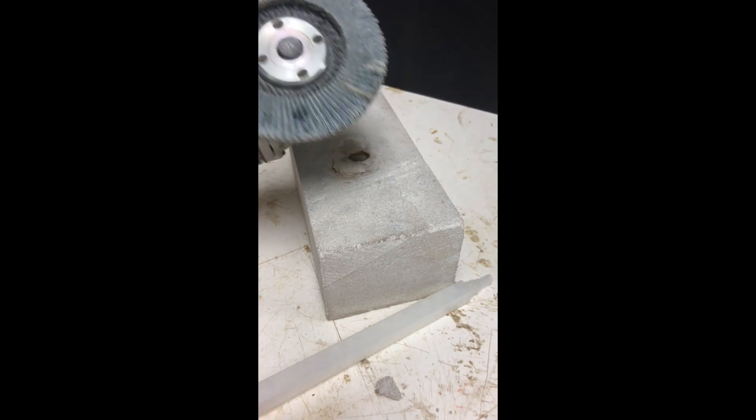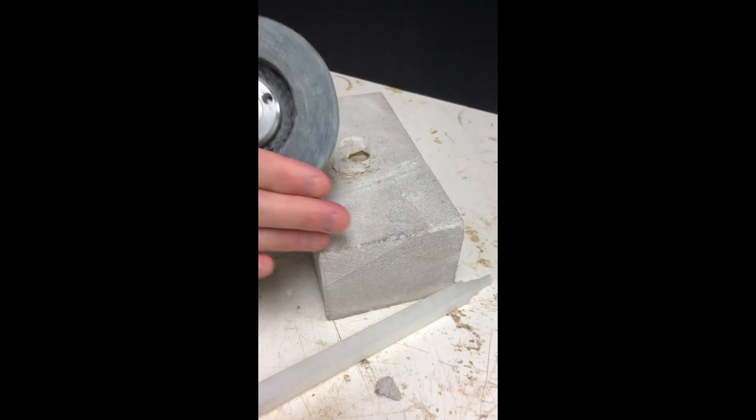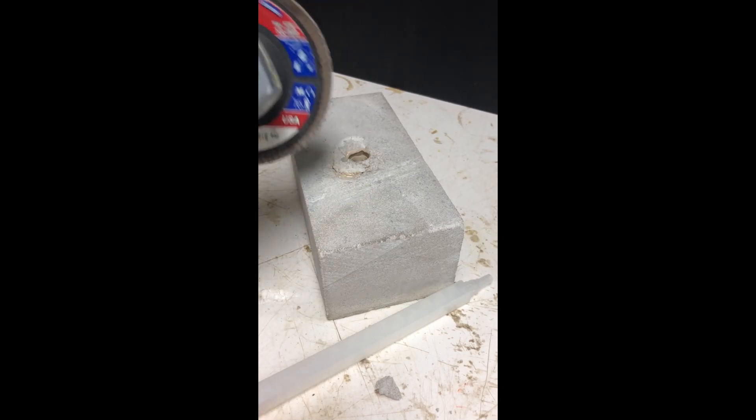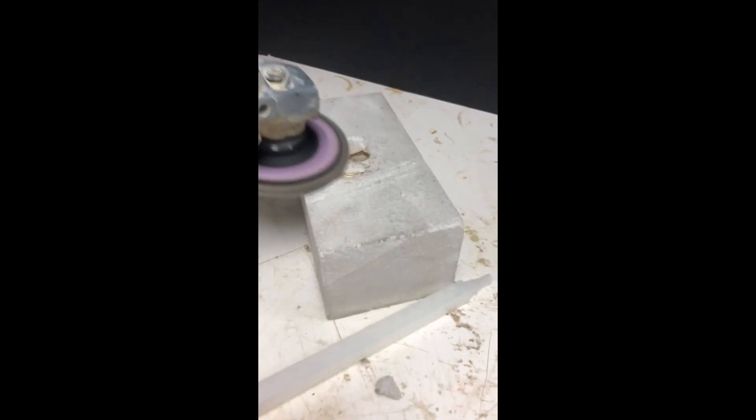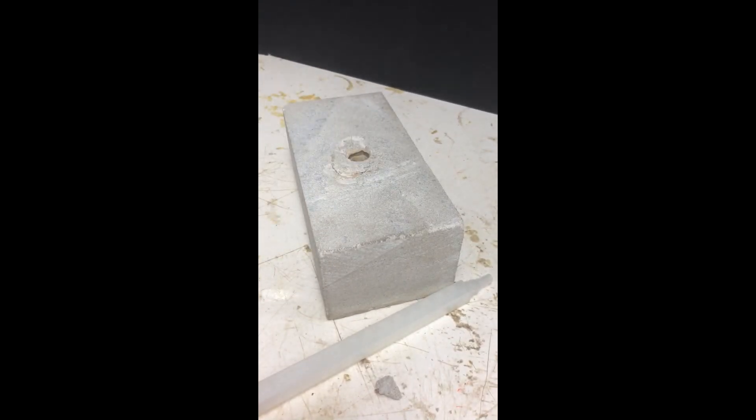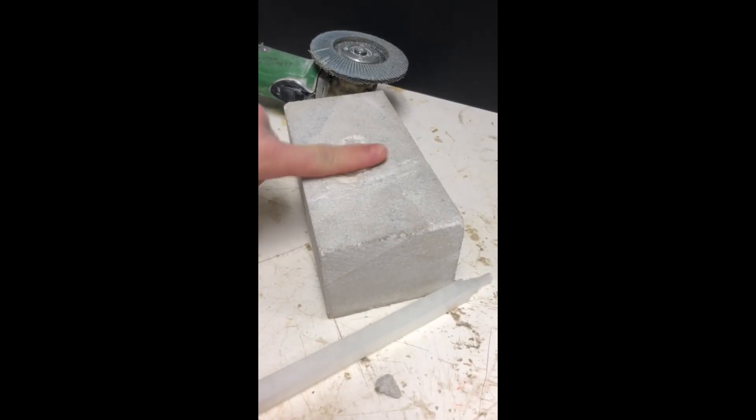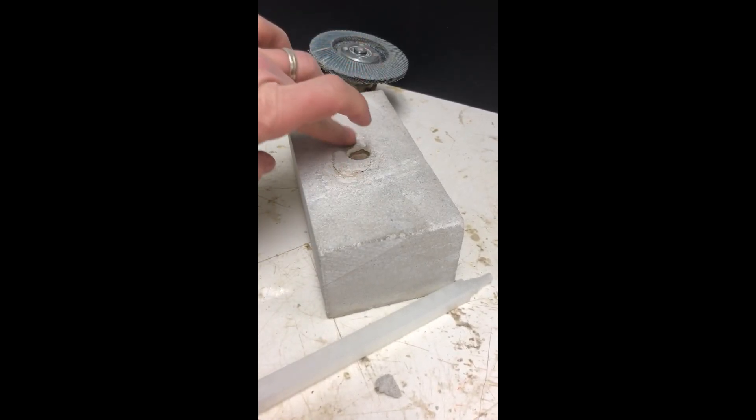It's an 80 grit flap pad. You can see they're overlapping so it's not going to leave pad marks on the stone. So generally, so now it's all flush.